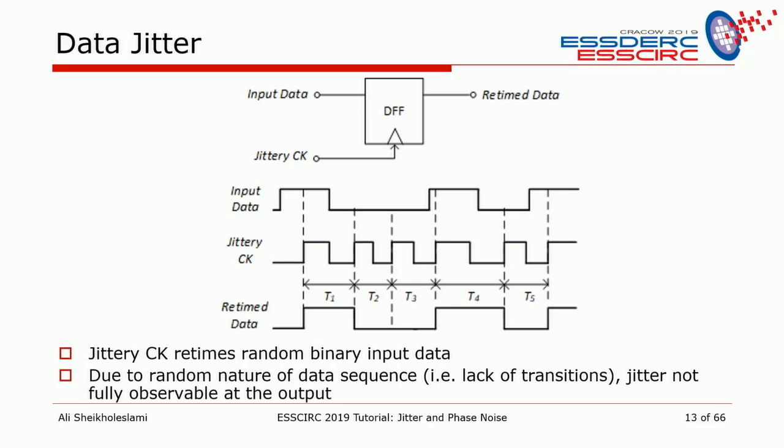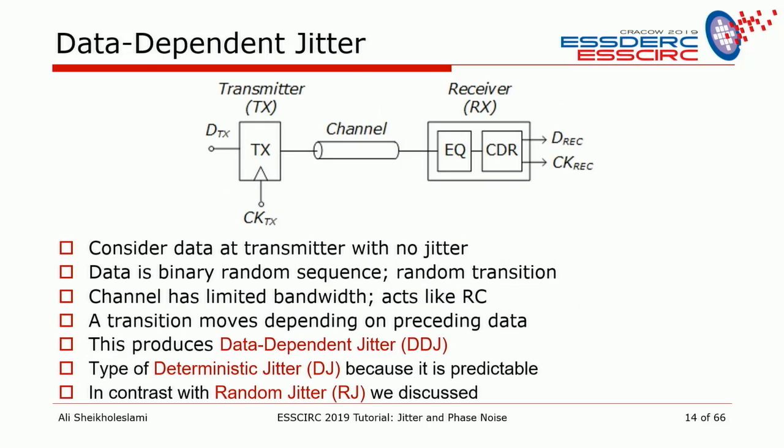Data also exhibits data-dependent jitter. If the signal goes through a frequency-dependent channel and the data is perfect with no jitter, the zero crossing will move slightly depending on the data pattern — how many consecutive ones or zeros there are. Every data pattern moves the zero crossing by a different amount. This is data-dependent jitter, and unlike random jitter, it is deterministic and bounded — if you know the data pattern, you can predict the jitter.